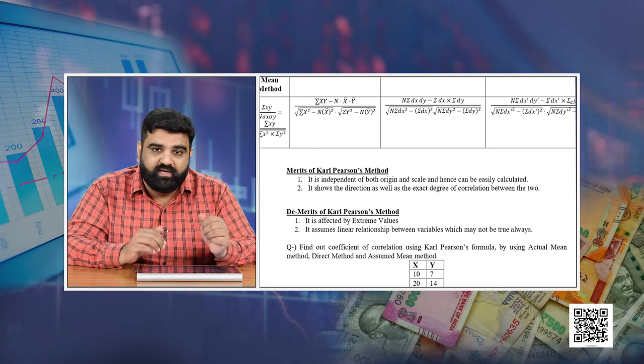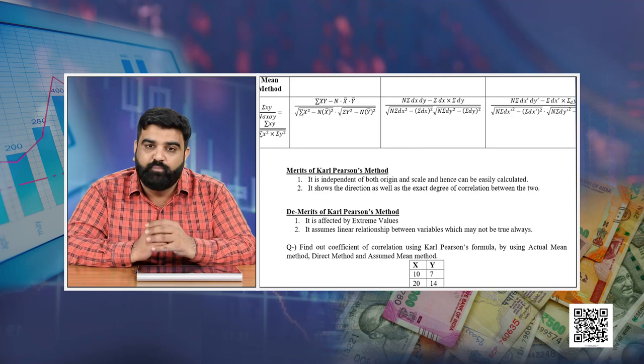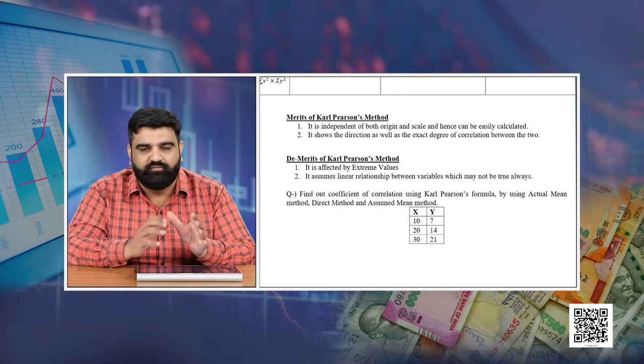The first merit of Karl Pearson's method is that it is independent of both origin and scale and hence can be easily calculated. The second merit is that it shows the direction as well as the exact degree of correlationship between the two variables. The first demerit is that it is affected by extreme values because we are calculating the mean. The second demerit is that it assumes a linear relationship, meaning the correlation between two variables can be drawn as a simple line on a graph, but this may not always be true.